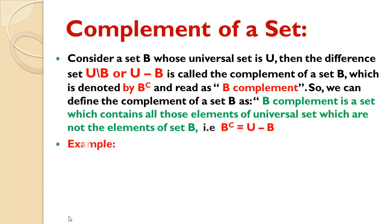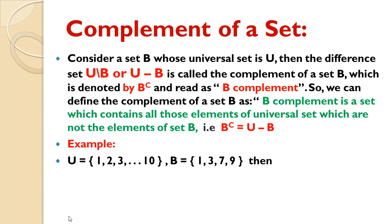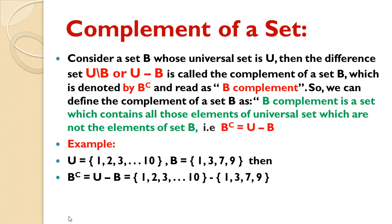Example: Given Universal Set U = {1, 2, 3, ..., 10} and set B = {1, 3, 7, 9}. Then B complement = U - B. We write U's elements, difference sign, then set B's elements. B complement contains all elements of Universal Set which are not in set B. Those elements are 2, 4, 5, 6, 8, 10. These are the elements of Universal Set not present in set B — which is our required result.